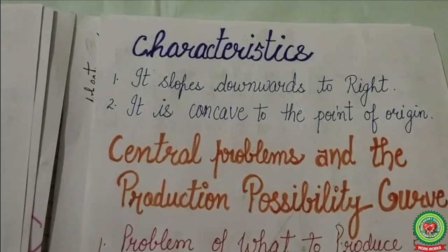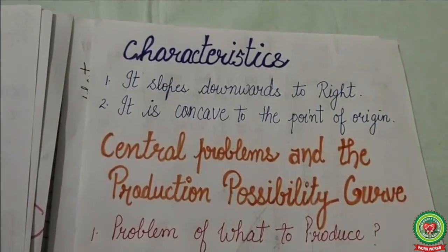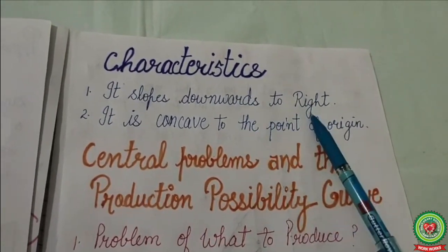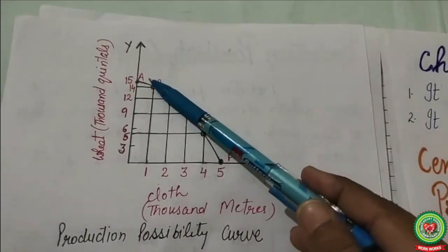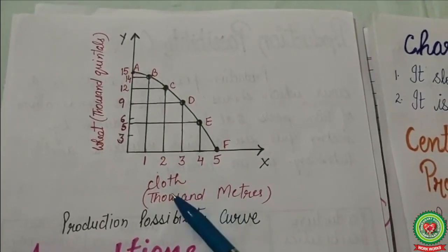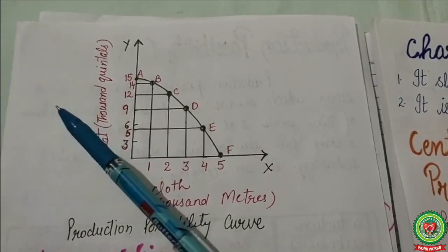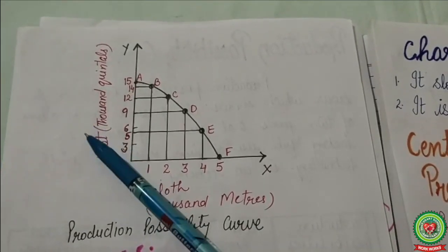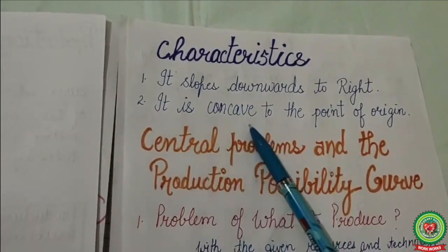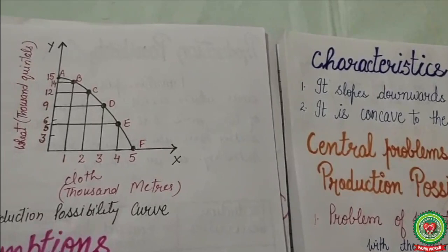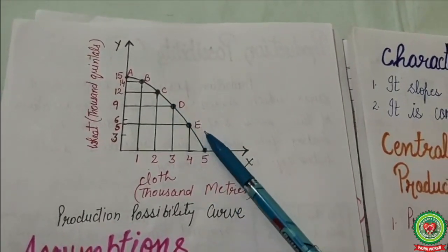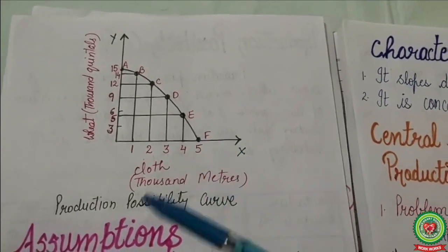Next are the characteristics of the Production Possibility Curve. There are two characteristics. First, it slopes downwards to the right — as we choose to produce one more unit of cloth, we lose some quantity of wheat. Second, it is concave to the origin, as it shows the operation of the law of increasing marginal opportunity cost.